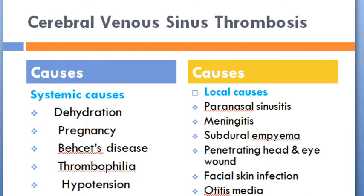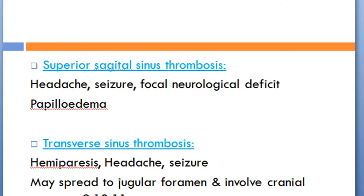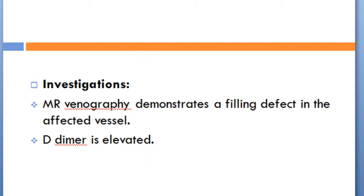Cerebral venous sinus thrombosis (CVST): systemic causes include dehydration, pregnancy, Behçet's disease, thrombophilia, hypotension, and OCP. Local causes include paranasal sinusitis, meningitis, subdural empyema, penetrating head injury, facial skin infection, otitis media, and mastoiditis. Cavernous sinus thrombosis may present with proptosis, ptosis, headache, external and internal ophthalmoplegia, reduced sensation of trigeminal first division, and papilledema. Superior sagittal sinus thrombosis may present with headache, seizure, focal neurological deficit, and papilledema. Transverse sinus thrombosis may present with hemiparesis, headache, and seizure, and may spread to involve cranial nerves 9, 10, and 11.